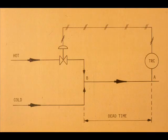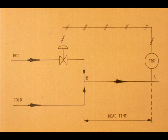Here is another example of dead time. The TRC maintains temperature at A by emitting hot water at B, but the water must flow from B to A before the TRC can detect the temperature change.